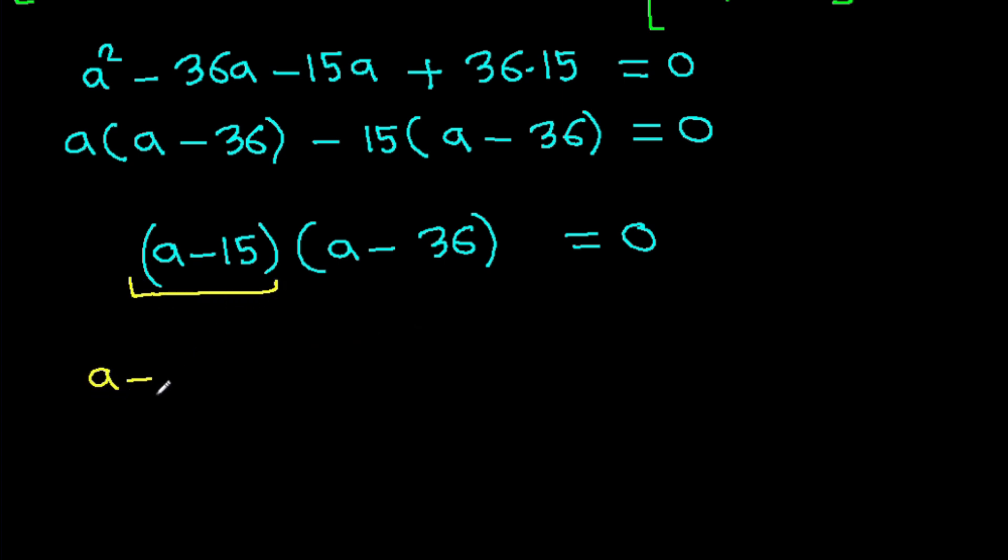So a minus 15 can be 0, so a will be 15. And a minus 36 can be 0, so a will be 36.